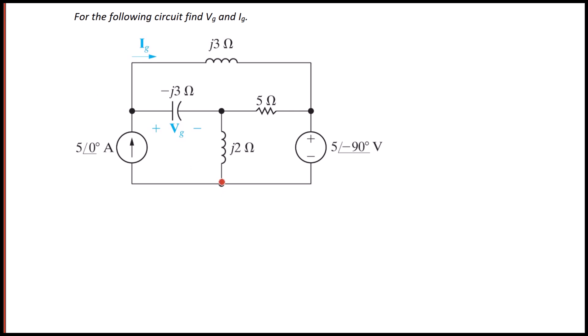So if I label a ground here, I'm gonna name this node V1 and name this node V2. I don't name this node anything because this node's name is five angle negative 90 degrees.